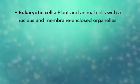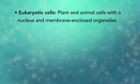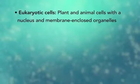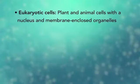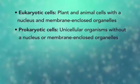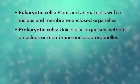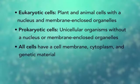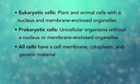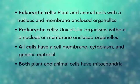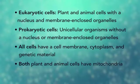In summary, remember, eukaryotic cells are plant and animal cells with a nucleus and membrane-enclosed organelles, while prokaryotic cells are unicellular organisms without these things. All cells have a cell membrane, cytoplasm, and genetic material. And even though only plant cells have chloroplasts, both plant and animal cells have mitochondria.